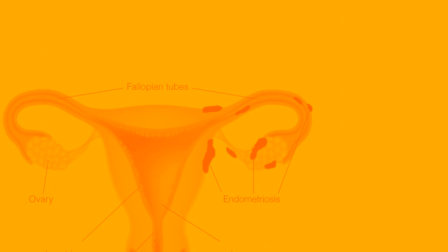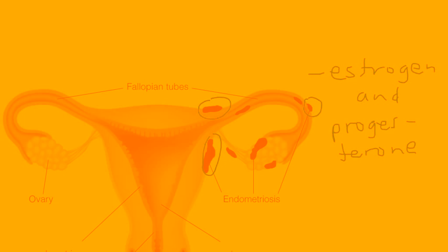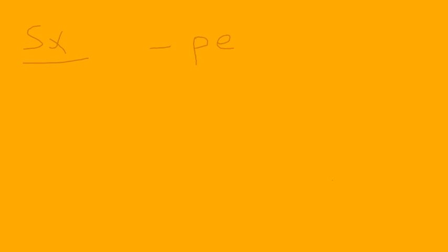Going back to the diagram, these ectopic pieces of endometrial tissue have estrogen and progesterone receptors, and that's important because those receptors allow these pieces of tissue to grow when there are changes in hormone levels. That can present a huge problem, and we'll talk about how it can be managed.